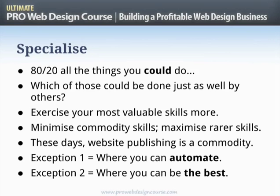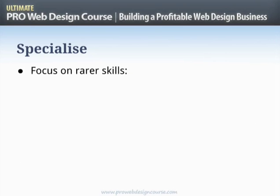For most of us, we should be very focused and determined: if something I'm doing right now could be done just as well by somebody else for less, you should be paying that person to do it. So what are these rare skills? Generally it comes down to strategy. Lots of people know how to make a website, lots of people can do some graphic design or SEO.